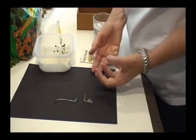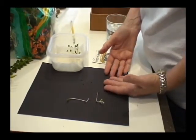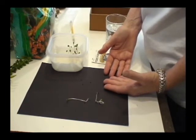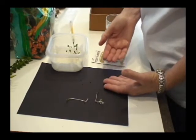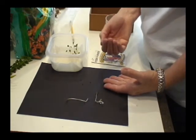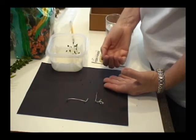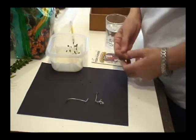So the seed takes up water. The first thing it does is send out a root so it can continue to take up water. And then it sends up a pair of leaves so it can begin doing photosynthesis, manufacturing food for it to grow. That is what germination is.